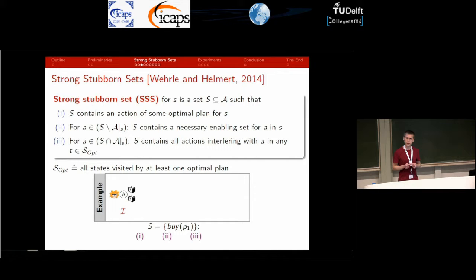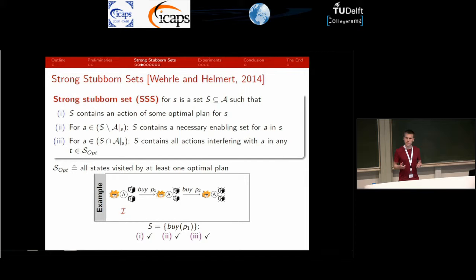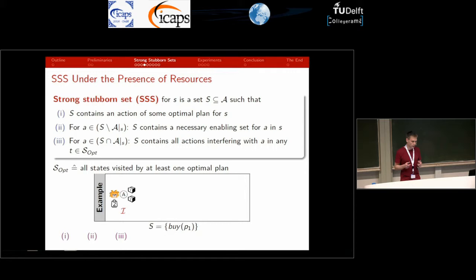Back in the example, without a resource variable, consider the set of actions which just contains the buy P1 action. Since this action must be executed along every optimal plan, condition one is satisfied. Since this action is already applicable initially, condition two is satisfied. And since buy P1 and buy P2 are permutable in every state in the example without resources, condition three is also satisfied. Therefore, this set gives a strong stubborn set, and when used as a pruning function, we will indeed only expand a single path.